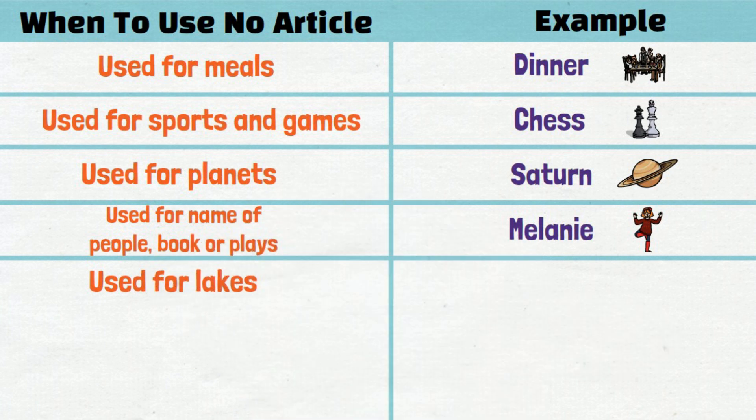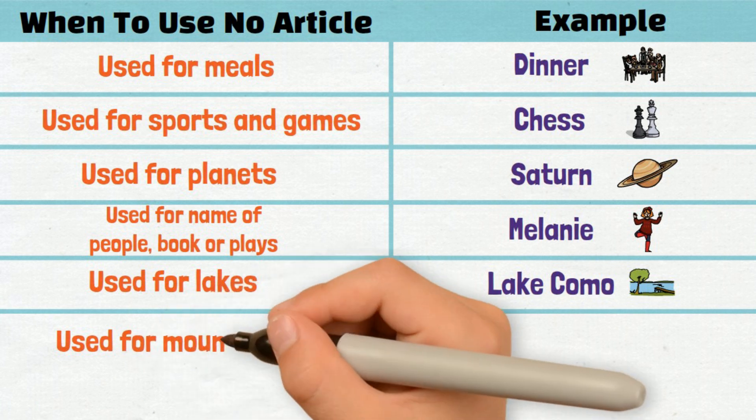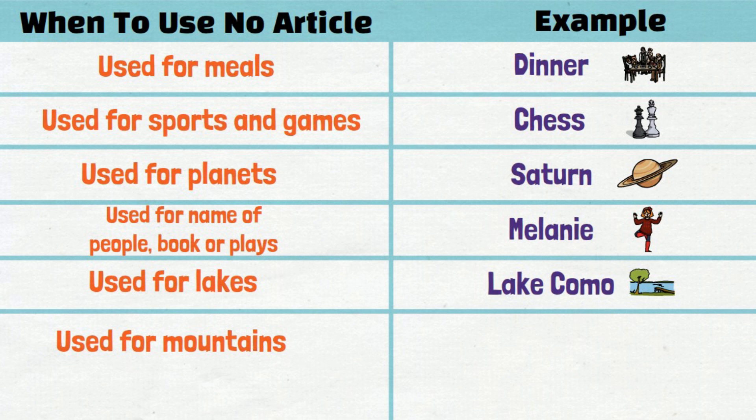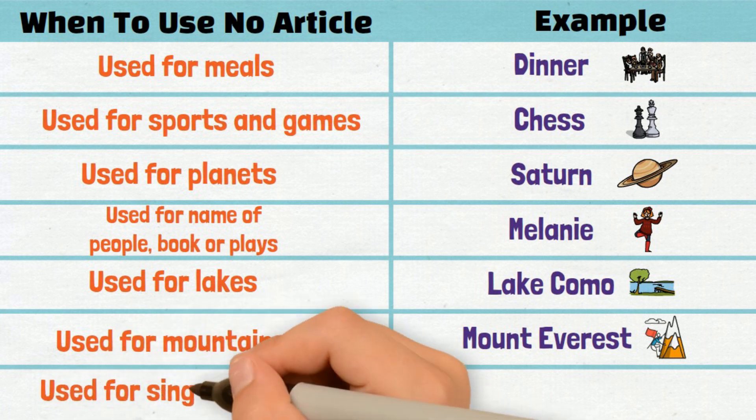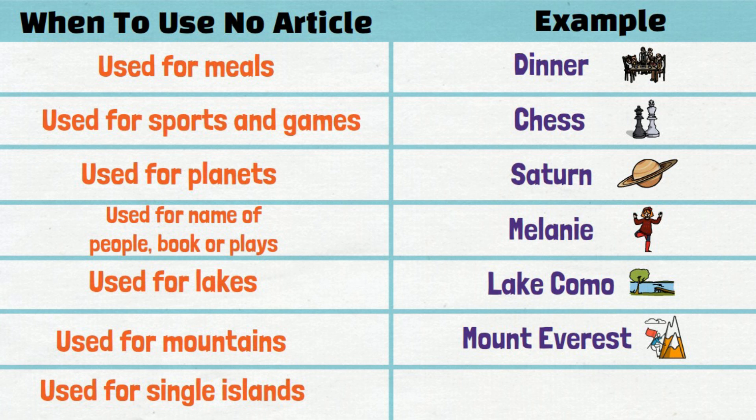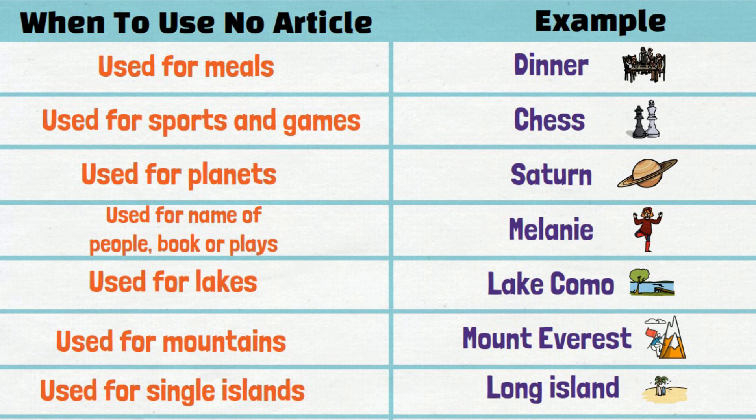No article is used for lakes: Lake Como. Used for mountains: Mount Everest. Used for single islands: Long Island.